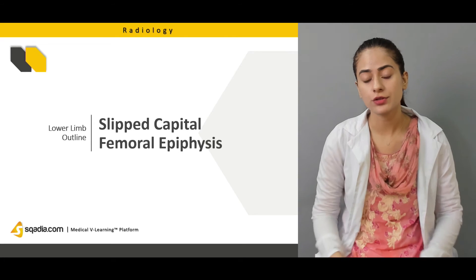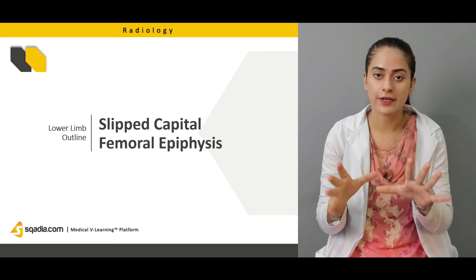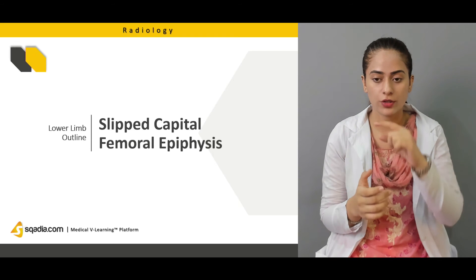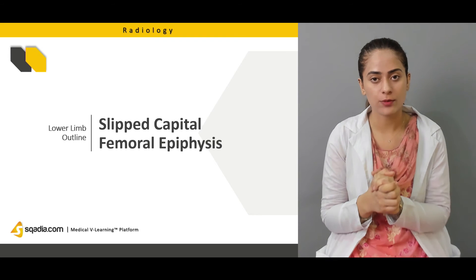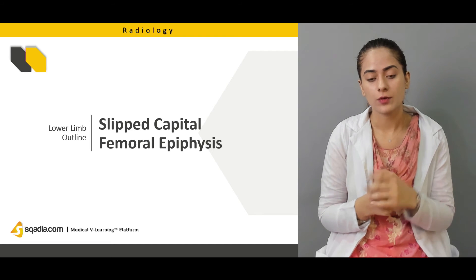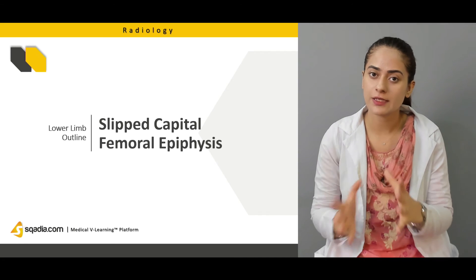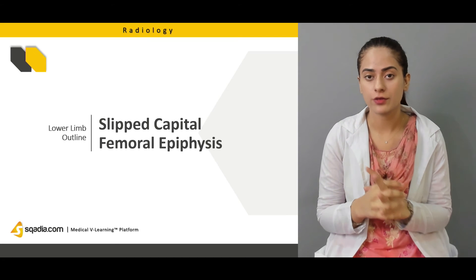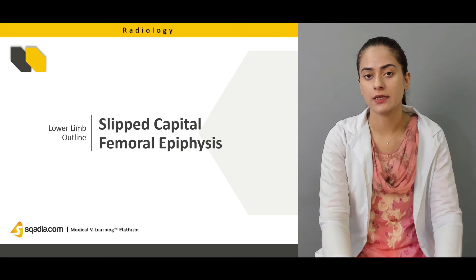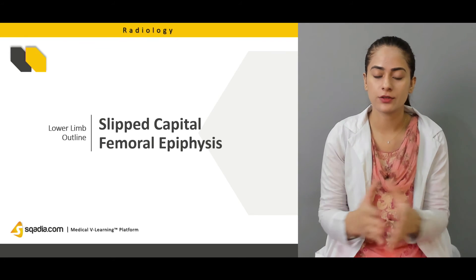Then we're going to talk about capital femoral epiphysis slip. There are three epiphyses in the femur and pelvis bone: one right at the acetabulum, one known as the capital femoral epiphysis in the middle of the femoral head, and one in the neck of the femur known as the trochanteric epiphysis. We're going to discuss the anatomical location of all three and specifically talk about capital epiphyseal slip, which occurs in children below the age of 15.